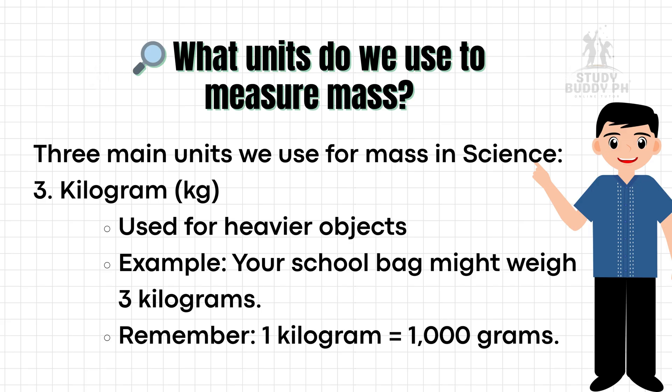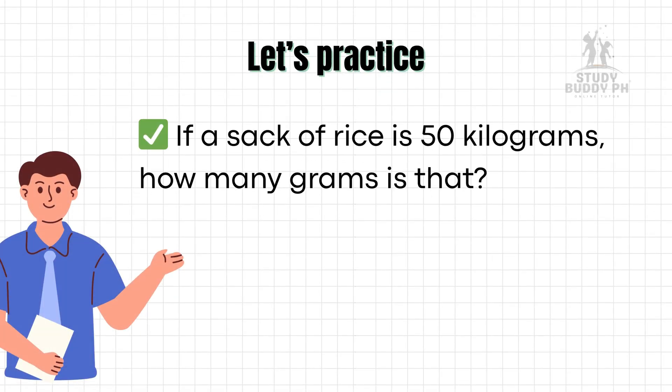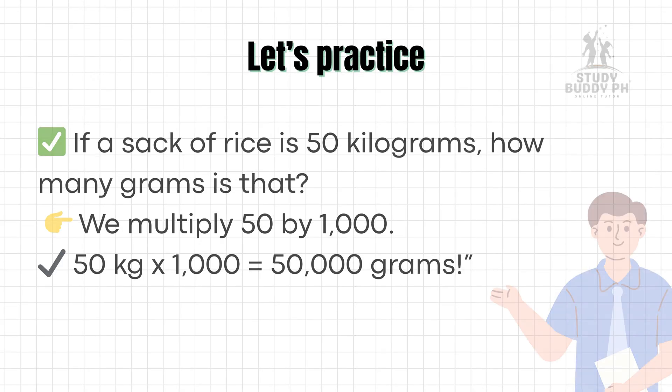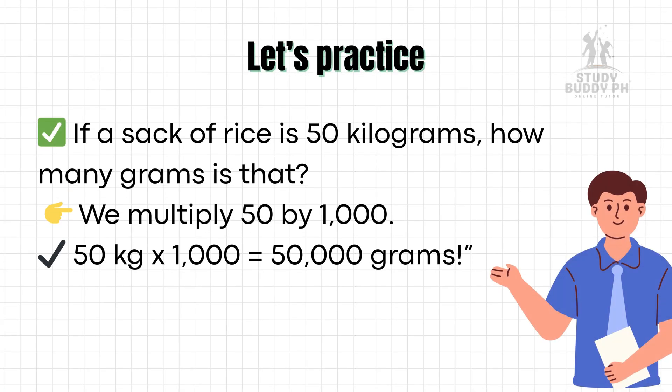Remember, 1 kilogram equals 1,000 grams. Let's practice converting. If a sack of rice is 50 kilograms, how many grams is that? We multiply 50 by 1,000. 50 kilograms times 1,000 equals 50,000 grams.